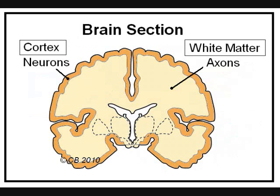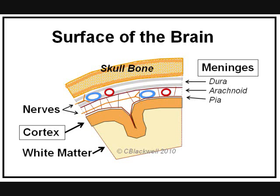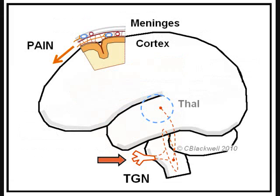Here is a slice through the middle of the brain. The outer layer is called the cortex — it contains the bodies of the nerve cells that make up the brain, also called the gray matter. Each nerve cell sends out a long process called an axon that connects to and communicates with other nerve cells; the axons make up the central white matter. Inside the skull there are protective layers called meninges, which also contain blood vessels and nerves. These are the pain-sensitive structures in the brain — the substance of the brain itself does not feel pain. Pain signals from the meninges are carried by branches of the trigeminal nerve, labeled TGN, through the brain stem and then to the pain-sensing parts of the brain. The trigeminal nerve mediates the pain in migraine.